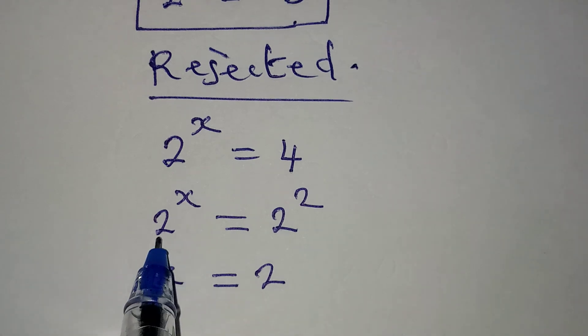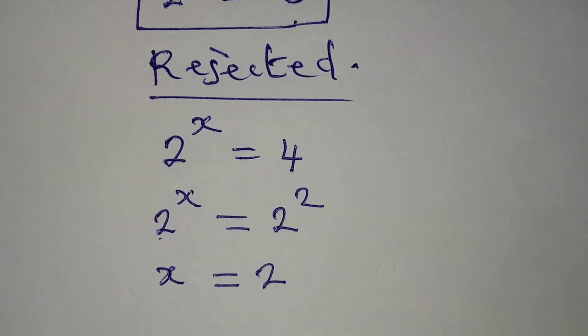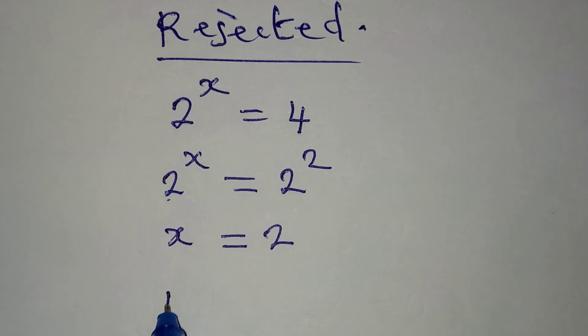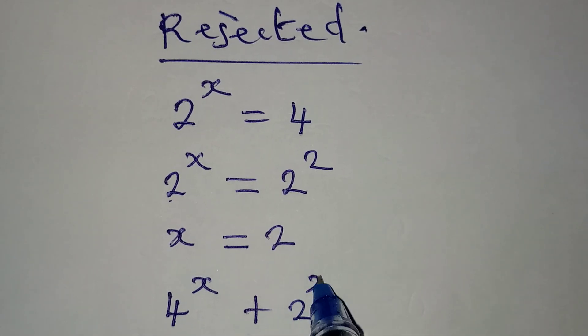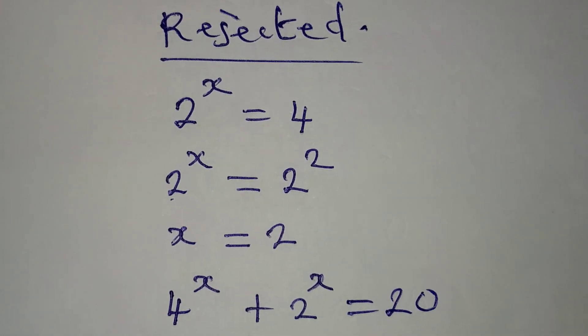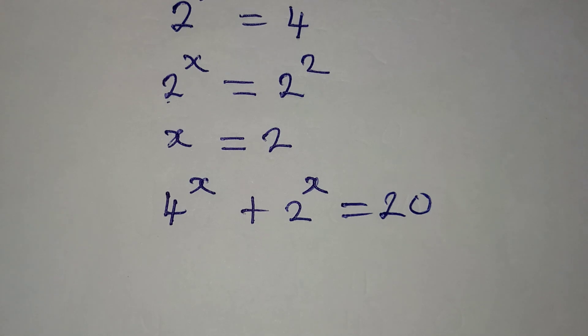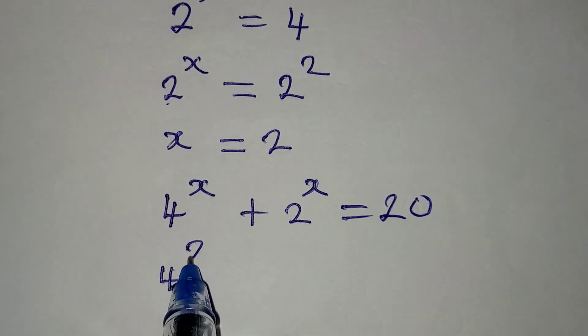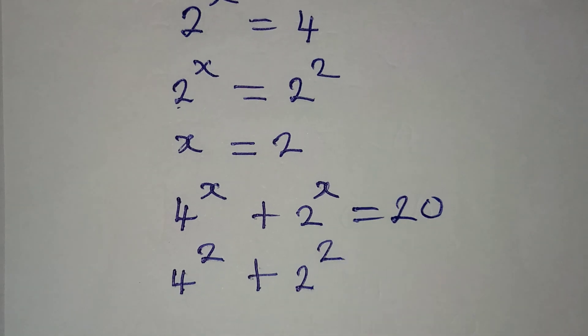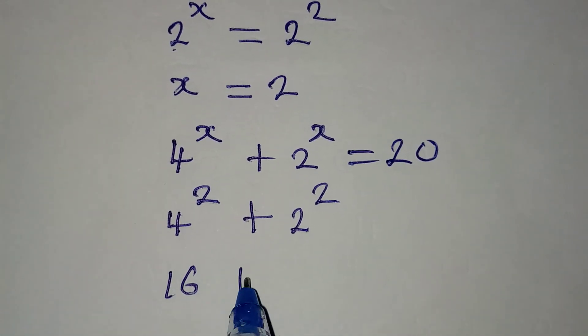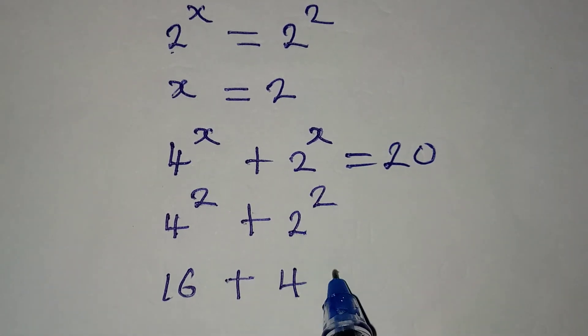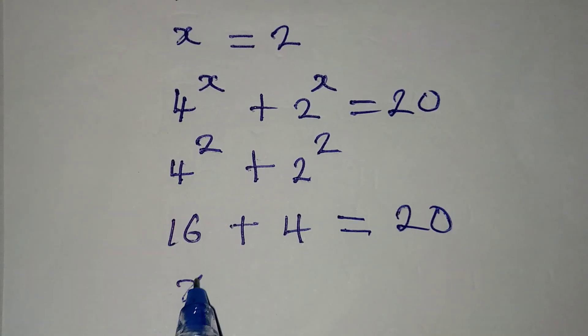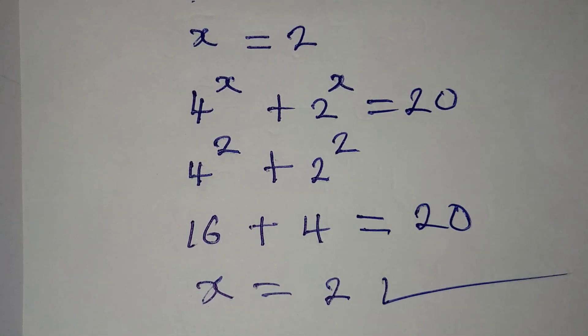Now let's get back to the original equation where we had 4 to the power of x plus 2 to the power of x equals 20. Remember, we were to find only the real solution. Now let's get this done. If you put in your 2 here, you're going to have 4 to the power of 2 plus 2 to the power of 2. 4 to the power of 2 is 16, and then 2 to the power of 2 is 4. At the end of the day, this is giving us 20. So what does it mean? It means that our x to be equal to 2 satisfies the given equation.